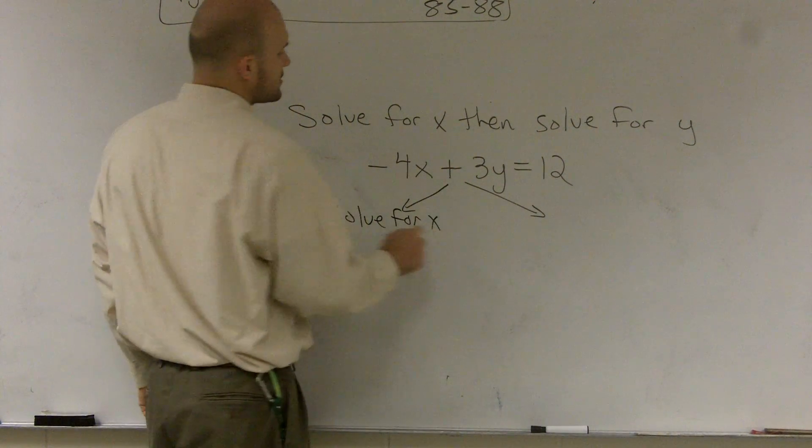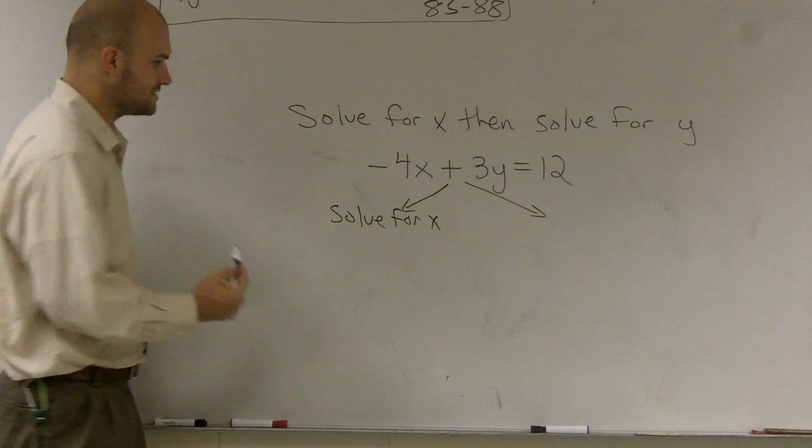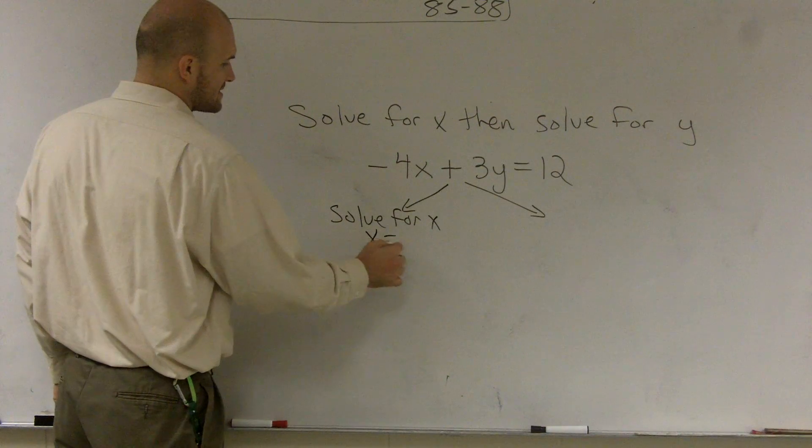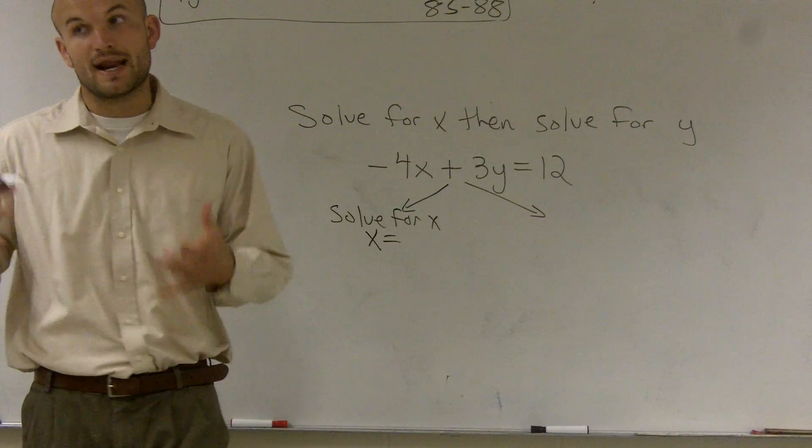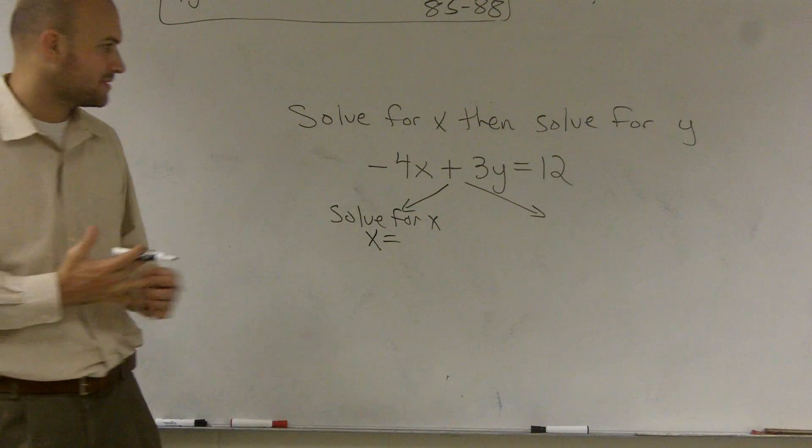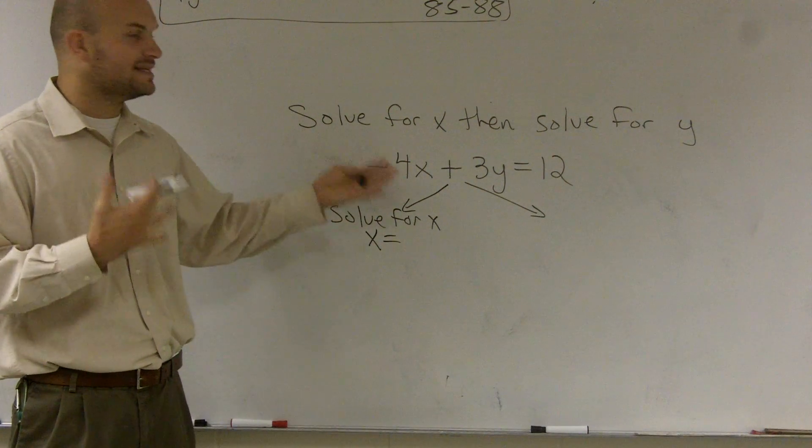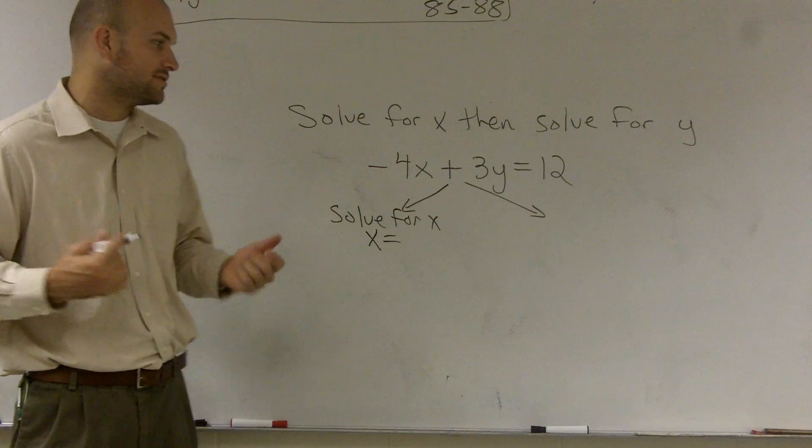Solve for x. So when I solve for x, what I want to do is I want to get x to equal something. That means I want x by itself. So to do that, what I need to do is I need to undo everything that's happened to the x.